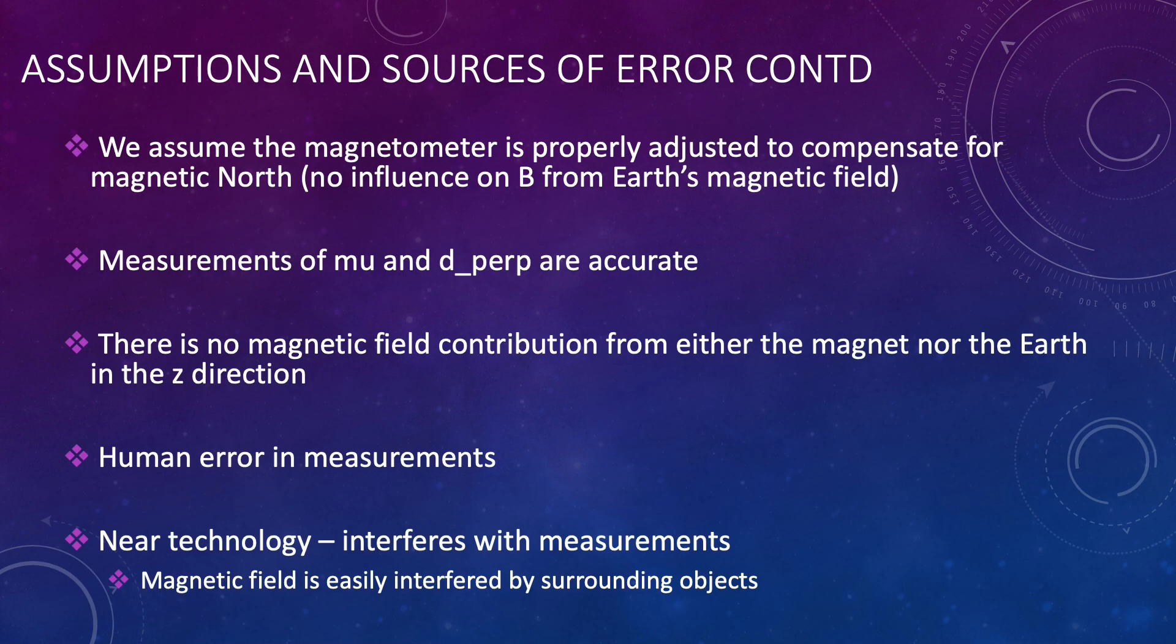Some reasons for the difference between theoretical and my calculations include that we assume that the magnetometer is properly adjusted, we assume that my measurements were accurate, we assume that there's no magnetic field contribution from the magnet nor the earth in the z direction, and we also need to acknowledge that there's human error in my measurements and that I was near other technology which also encompassed their own magnetic fields.